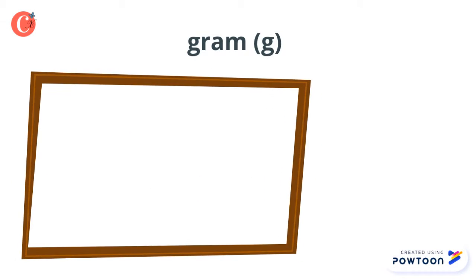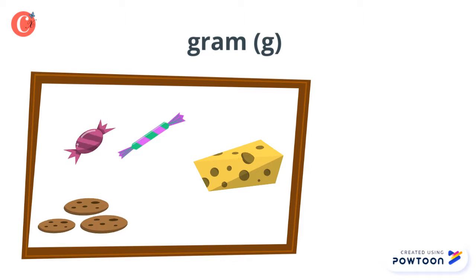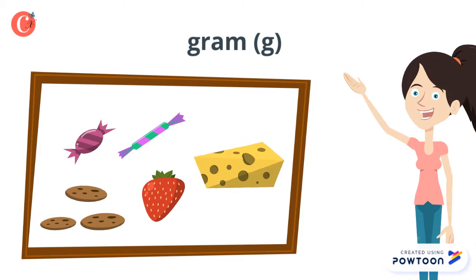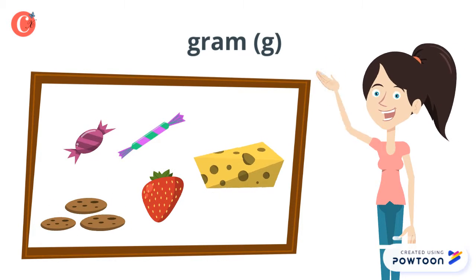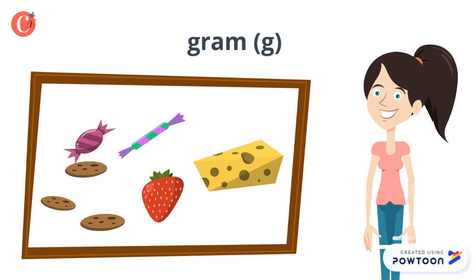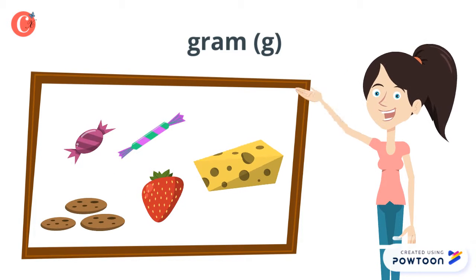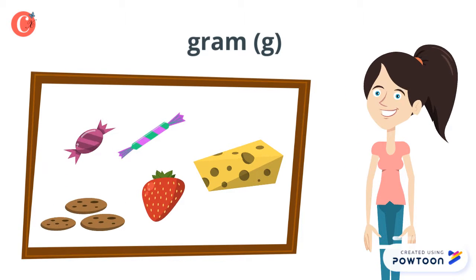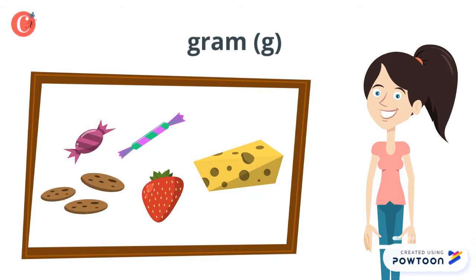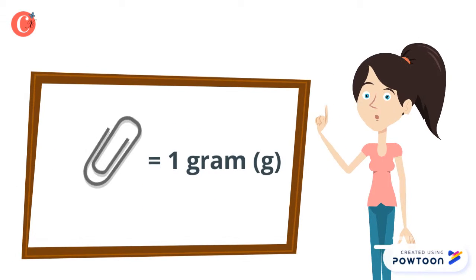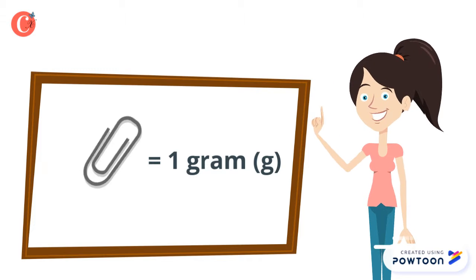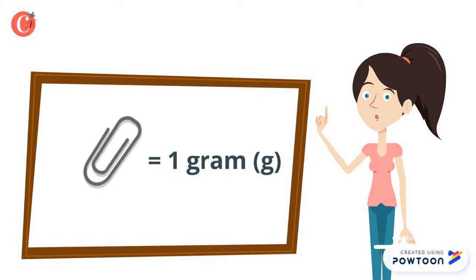Let's get a better visualization. Cheese, candy, cookies, and strawberries are objects that use grams as their measurement unit because they are light. A paper clip weighs about one gram. Hold one small paper clip in your hand — does that weigh a lot?